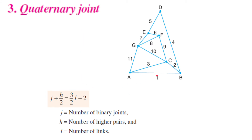For the quaternary joint case, there are around 11 links, seven joints, and no higher pair. Here LHS is greater than RHS, so such a chain is a locked chain — it is a rigid structure and cannot be used as a kinematic chain for transmitting force.